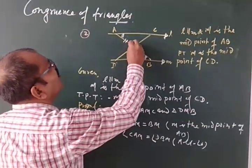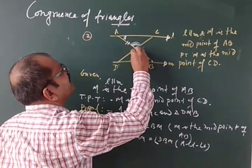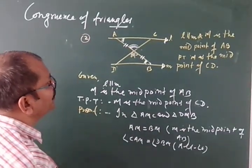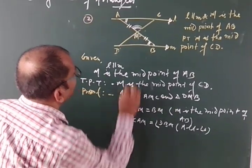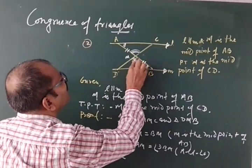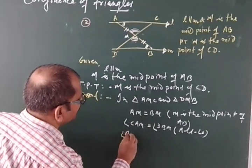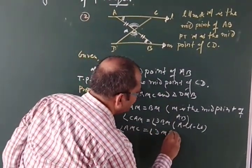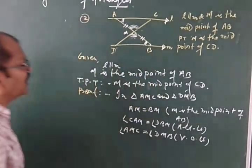And third one, vertically opposite angles. You have to mention in the figure, otherwise it may be wrong. So you will write angle AMC is equal to angle BMD, brackets, vertically opposite angles.